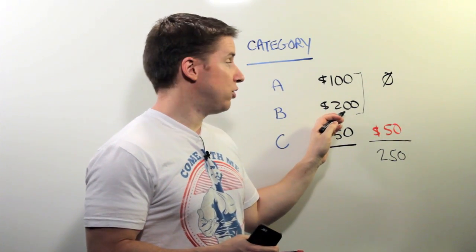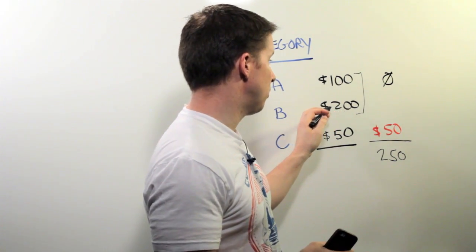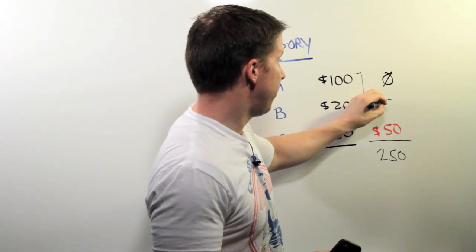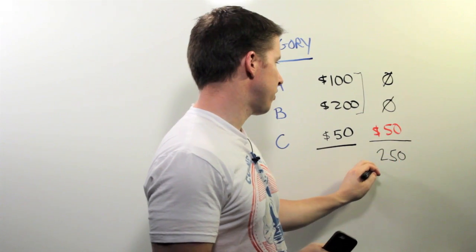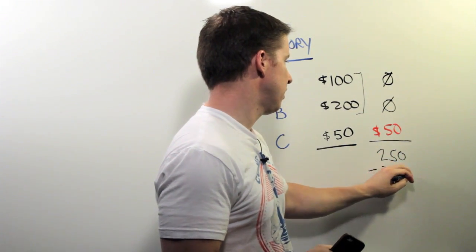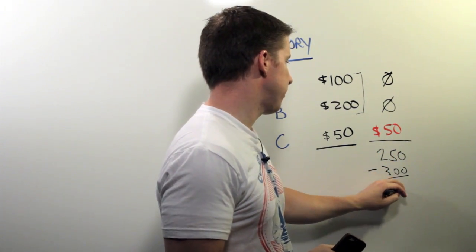And then you spend another $200 there, so minus $200 there. That goes down to zero. You're at minus $50 overall. We just spent $300. So if I subtract the $300, we're overdrafted by $50.